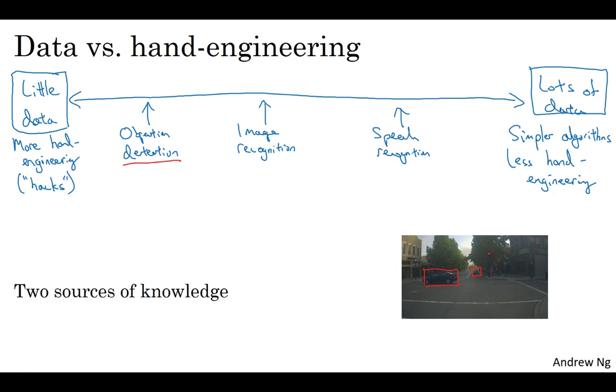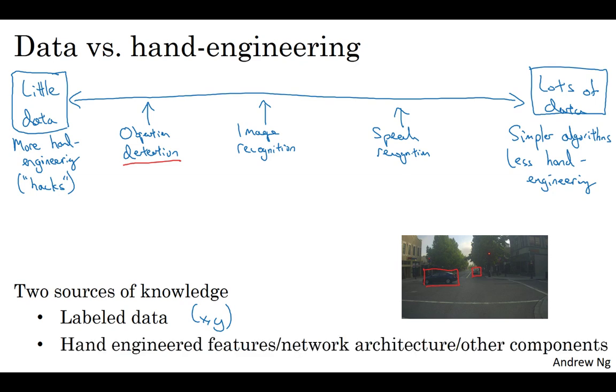When I look at machine learning applications, I think usually the learning algorithm has two sources of knowledge. One source of knowledge is the labeled data, really the X, Y pairs you use for supervised learning. And the second source of knowledge is the hand engineering.